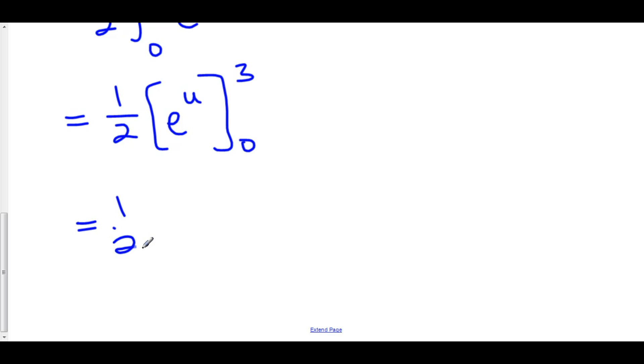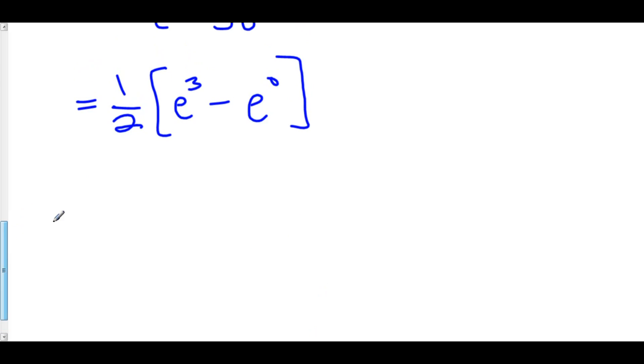This is 1 half quantity e cubed minus e to the 0. e to the 0 is just 1, so I can rewrite this as e cubed minus 1 all over 2, and that is the answer to this problem right here.